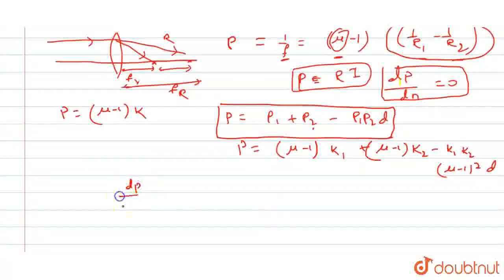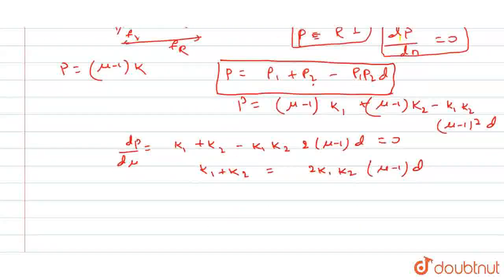dp by dmu equal to 0. So this is k1, this is k2, minus k1 k2 2 into mu minus 1 into d. Make this equal to 0. What does it become? k1 plus k2 equals 2 k1 k2 mu minus 1 into d.